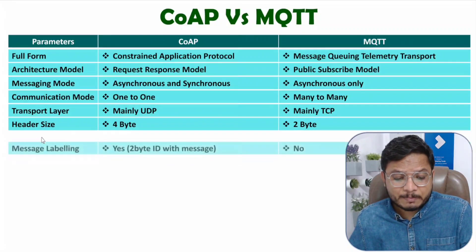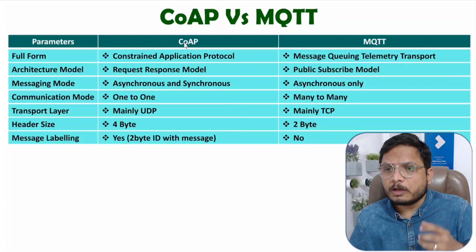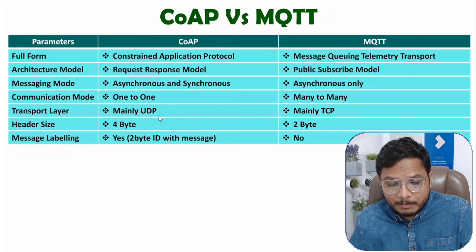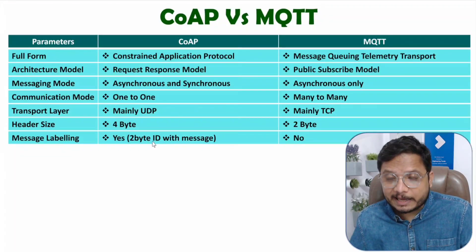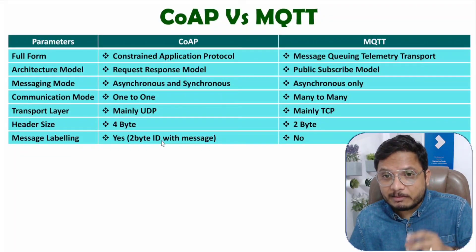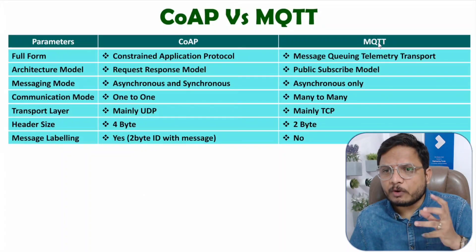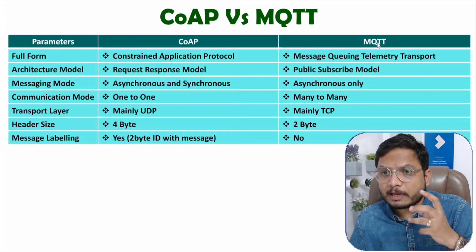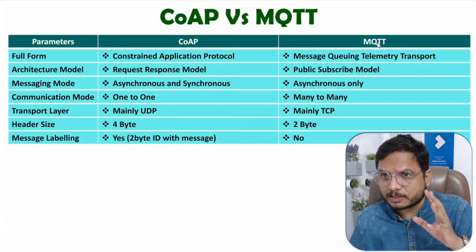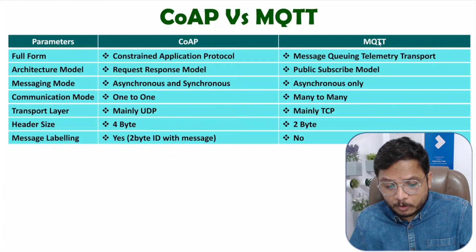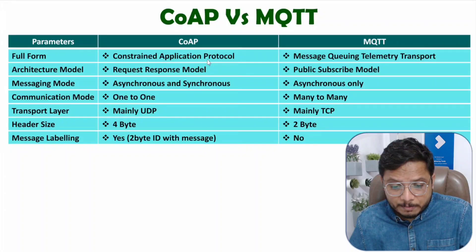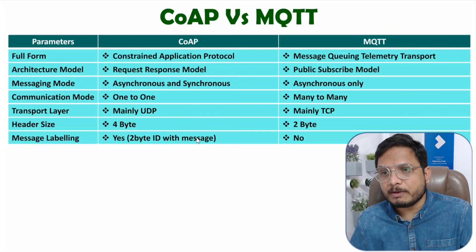The next parameter is Message Labeling. In CoAP Protocol, all messages are labeled by an ID and the size of the ID is 2 bytes. While with MQTT Protocol, we don't provide any ID or labeling to messages. So MQTT Protocol does not have any message labeling, while with CoAP Protocol, a 2-byte ID is forwarded with each message.